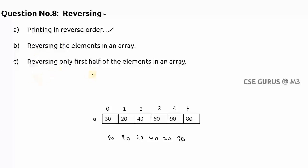For the third sub-topic, reversing only the first half: if we divide the array into two parts, only the first three elements are reversed. So the resultant should be 40, 20, 30, followed by the unchanged second half: 60, 90, 80. These are the three questions with respect to reversing an array.